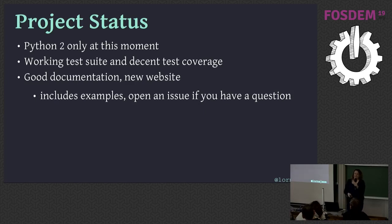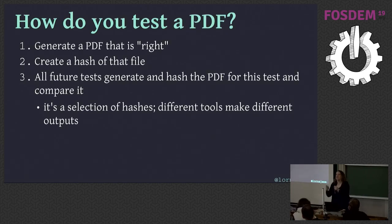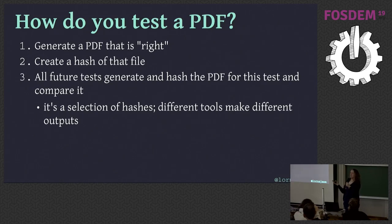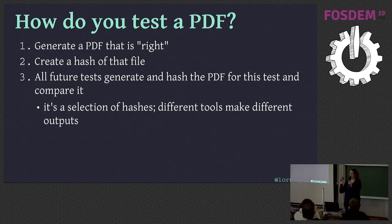I am always asked how you test a PDF. You generate a PDF that you're happy with — a human looks at it and says, yes, that is what I was aiming for. Then we create a hash of that file. When we run the test suite, the machine creates a PDF, hashes it, and makes sure the hashes match. We have a few known good hashes because if you have different dependencies — different ReportLab, different Inkscape — you get slightly different file hashes. We also have a piece of code that uses ImageMagick to visually compare the images and tell us if they're the same.